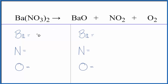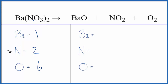We have one barium on the left side. The two in parentheses applies to everything inside, so we have two times one — two nitrogen atoms — and two times three — six oxygen atoms. On the product side we have one barium, one nitrogen, and one plus two plus two, so that's five total oxygen atoms.